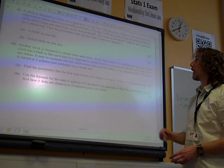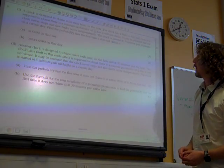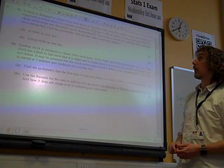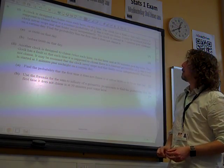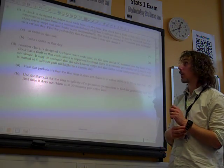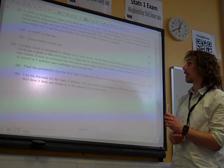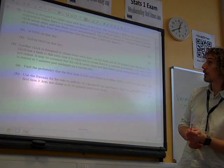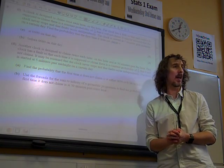A clock is designed to chime once each hour, on the hour. The clock is faulty, so that each time it is supposed to chime, there's a constant probability of a tenth that it will not chime. It may be assumed that the clock never stops, and that the faults occur independently. The clock is started at five minutes past midnight on a certain day. Find the probability that the first time it does not chime is at six o'clock on that day.